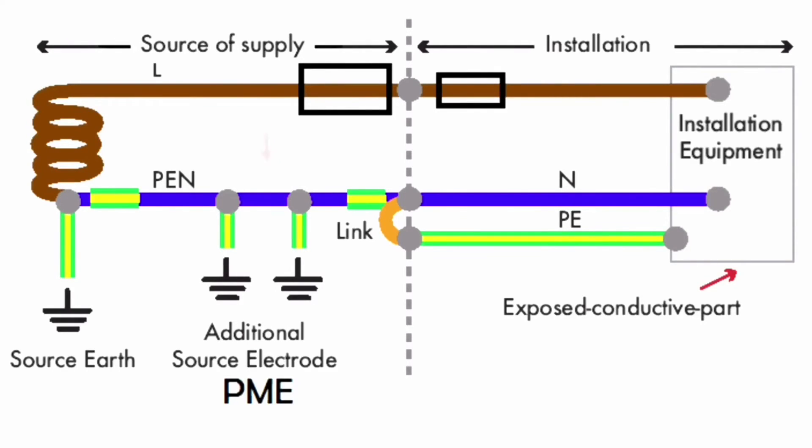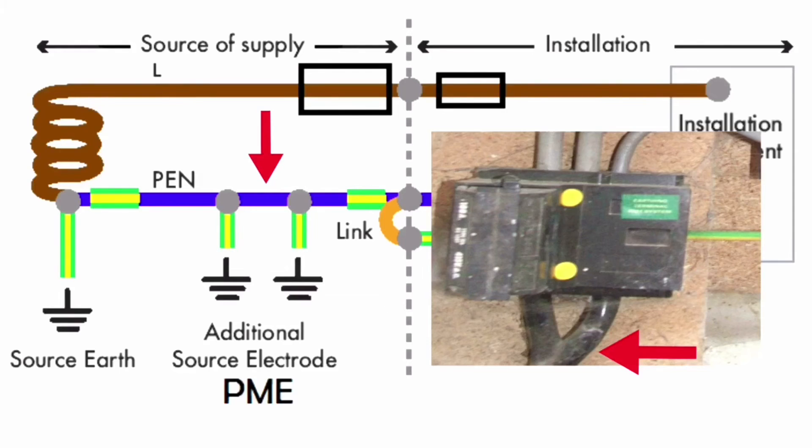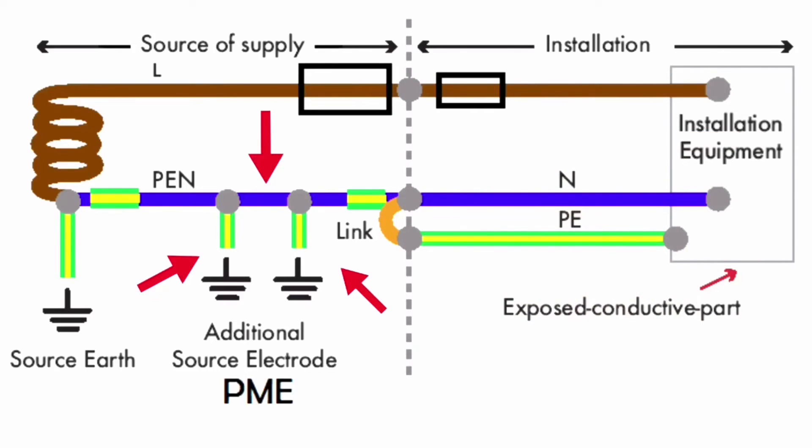This PEN conductor on the Supply Authority's side is staked throughout its run. We call this PME, Protective Multiple Earthing. This PME in the PEN conductor is very important, as loss of the Neutral on the Supply Authority's side would mean loss of the Protective Conductor in the installation. PME helps to prevent this happening.